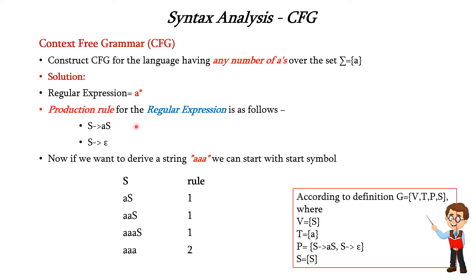Formally we can represent it as a 4-tuple. Here V is the variable, which is S. T is the terminal, which is the lowercase letter A. P is the set of productions — we have two productions as mentioned. And S is the start symbol, always the first symbol in the productions. Thus we have seen what context-free grammar is and how to derive a string using production rules.